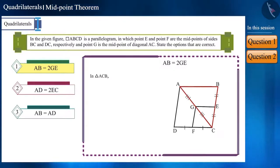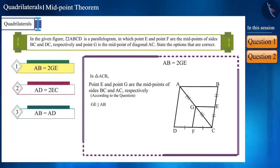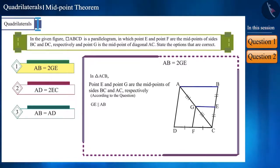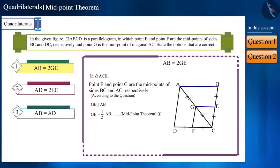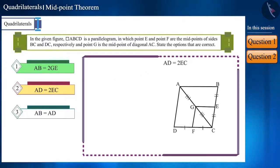Look at triangle ACB. Points E and G are the midpoints of sides BC and AC respectively. Therefore, according to the midpoint theorem, side GE is parallel to side AB and is half its length. We can write it this way. The first option is correct.